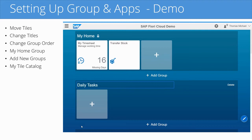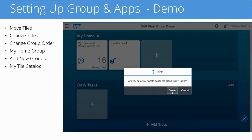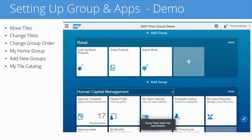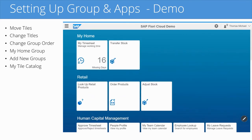I can also change the order of these groups. I could have another group called Weekly Tasks or Monthly Reports that I need to run. And if you don't need a group anymore, you can simply click on the delete button, confirm that you want to delete the group, and it's gone. When you're done with your changes, simply click on the personalize homepage button again and you exit change mode.